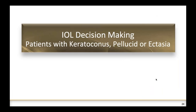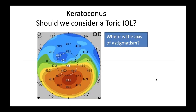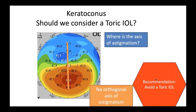Let's talk about IOL decision-making in patients with keratoconus, pellucid, or ectasia. One of the biggest questions is: when do you consider a toric lens? I try to see if I can identify the axis of astigmatism. In cases where it's not really obvious or not clearly stable over time, I'm not a big fan of putting a toric lens. I would just use a high-definition monofocal — specifically an aspheric IOL with neutral asphericity, with no asphericity power added. I try to use a monofocal lens in this type of case.